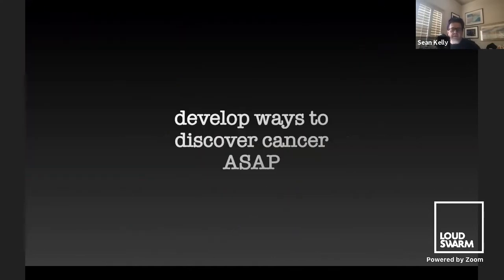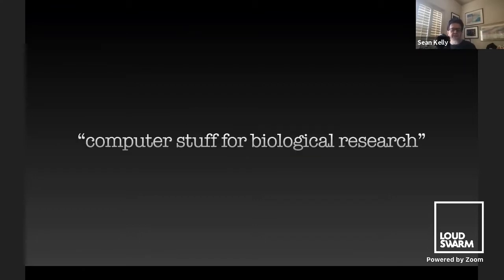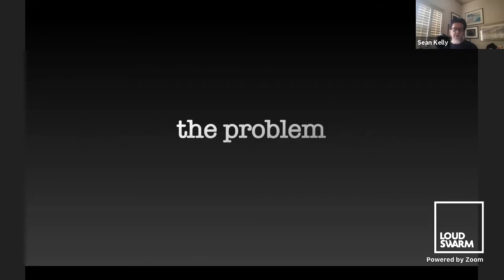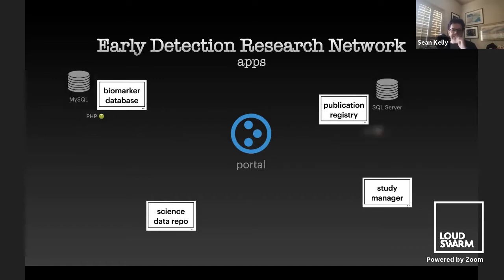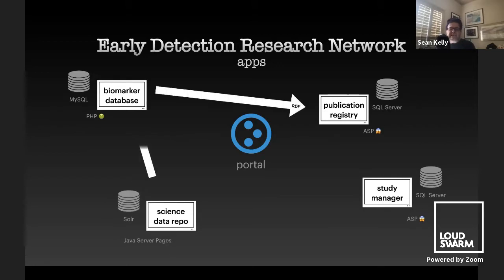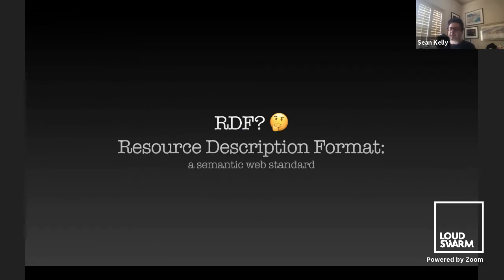Who is actually doing this? The Early Detection Research Network, EDRN, develops ways to discover cancer as soon as possible, using bioinformatics — which is just computer stuff for biological research. The problem is we've got a bunch of different applications and a portal, and all of these use different technologies and are non-interoperable. So we started using RDF to exchange information between them. What is RDF? It's the Resource Description Format, a semantic web standard.